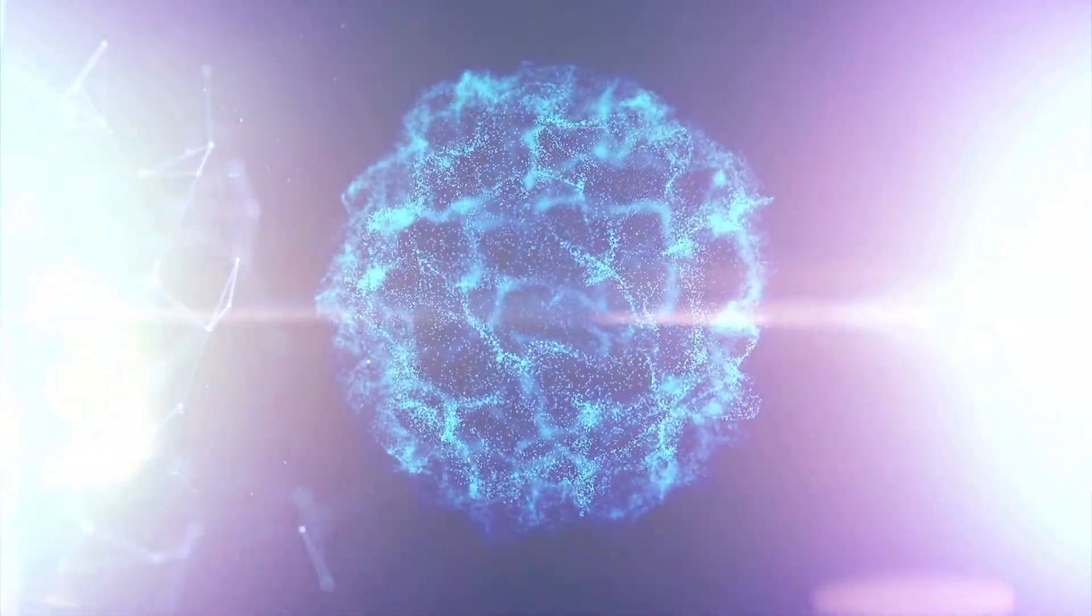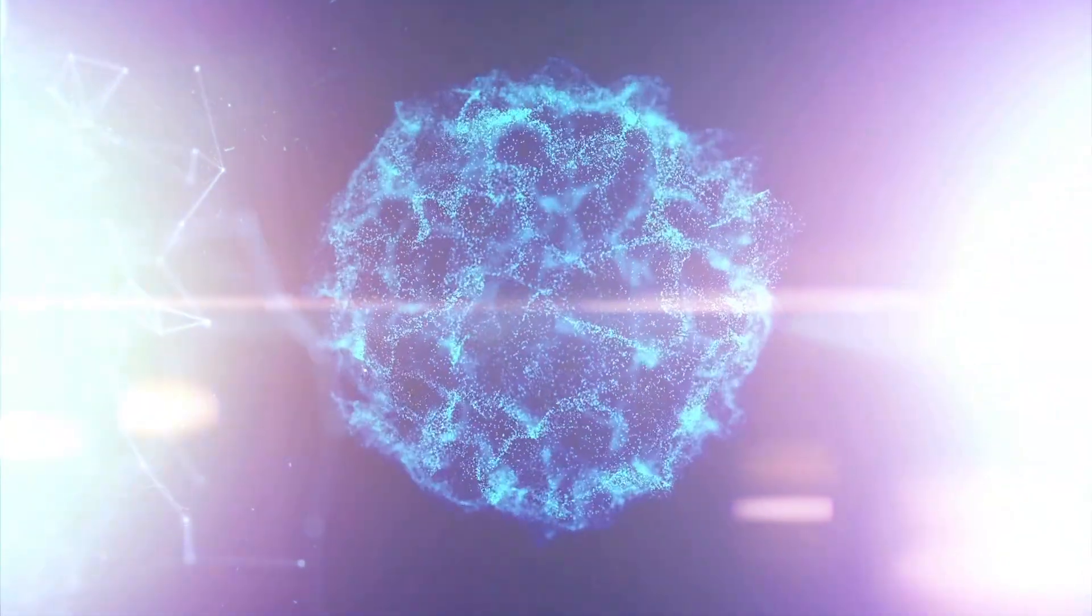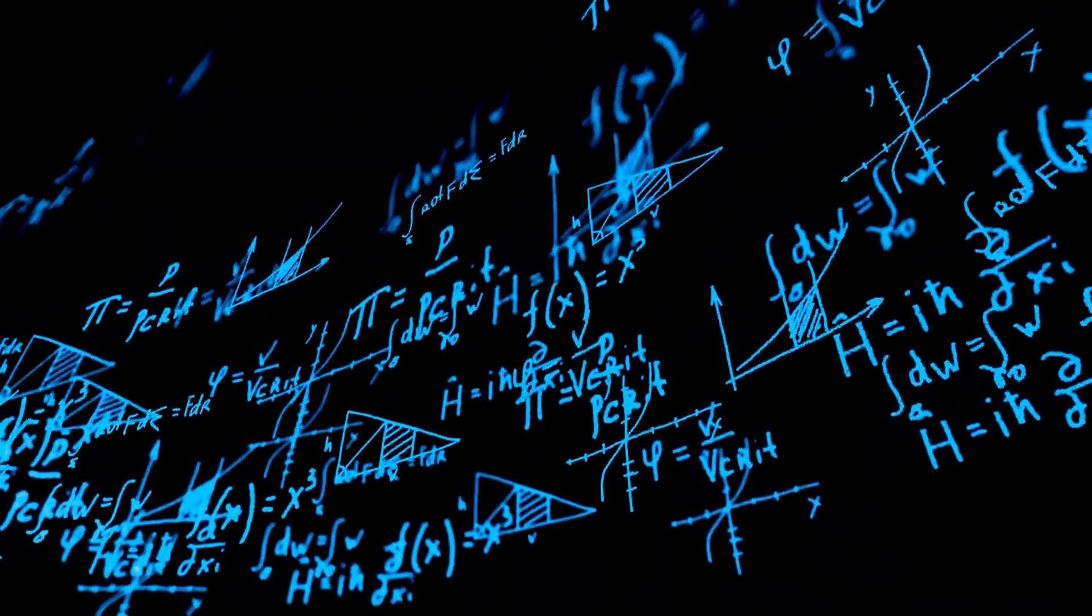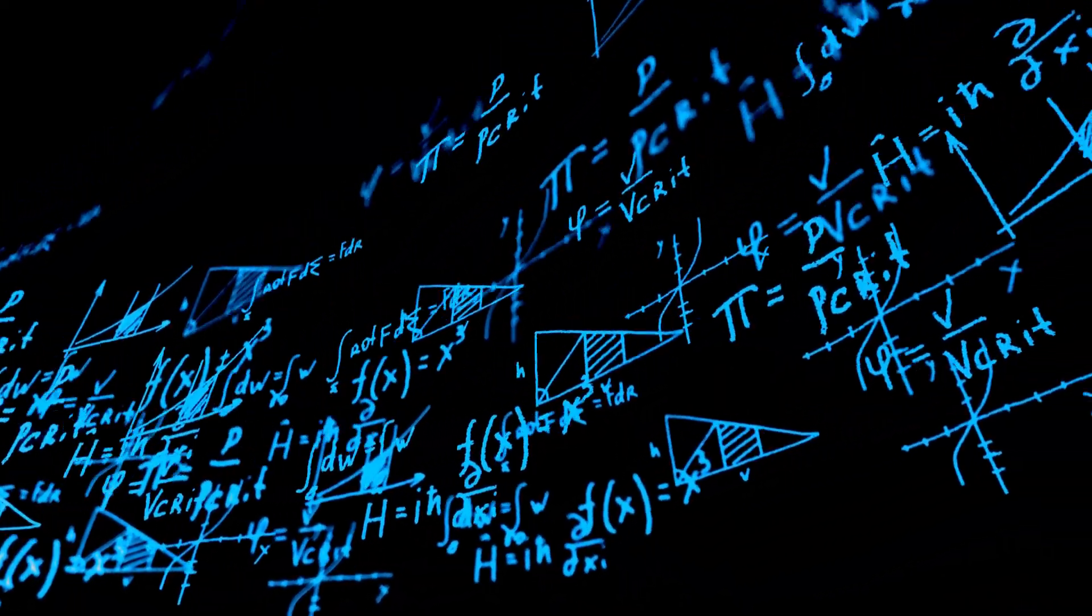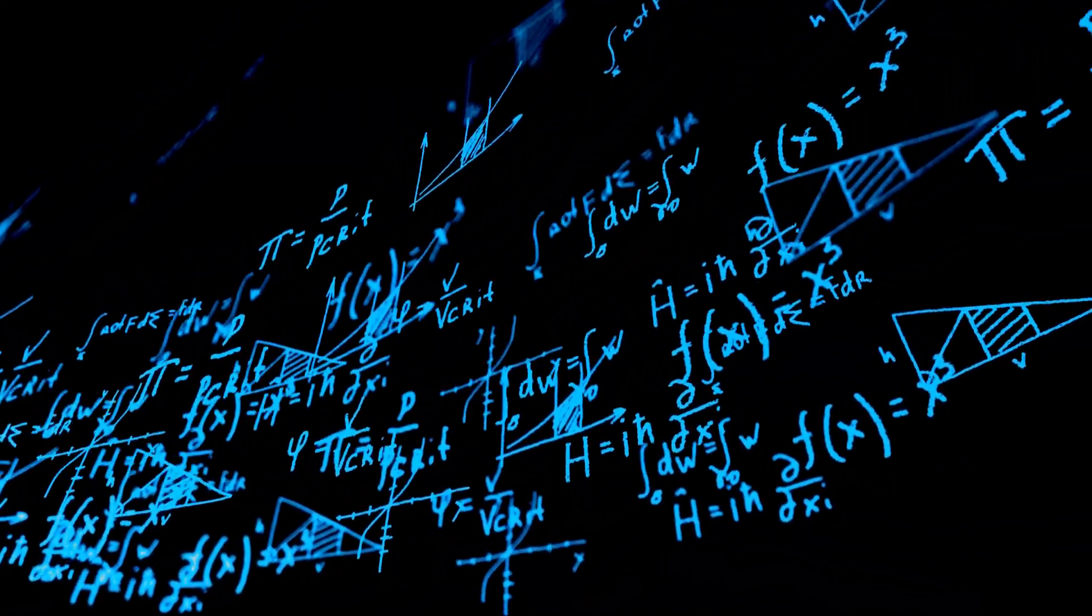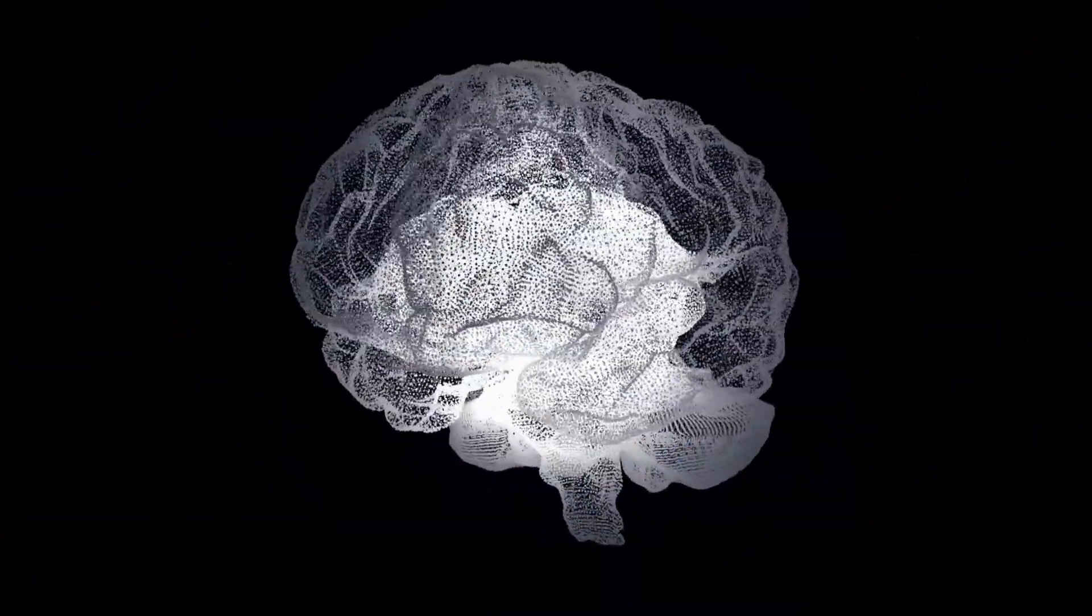If the universe is a web of interconnected energy, and the mind is part of that web, then perhaps the E8 lattice is the geometry that unites them. It's a possibility that connects the science of physics with the mysteries of consciousness.